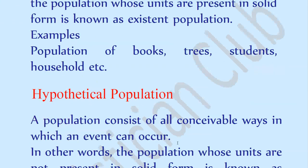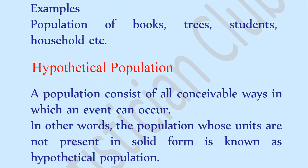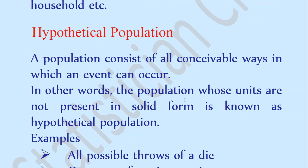Now we study what is hypothetical population. A population consists of all conceivable ways in which an event can occur. In other words, a population whose units are not present in solid form is known as hypothetical population.